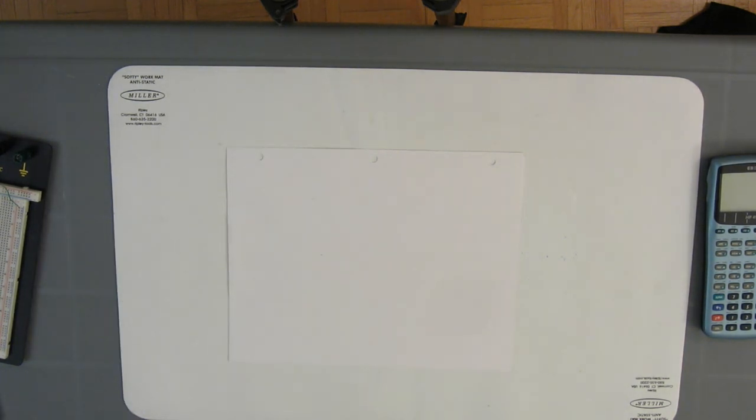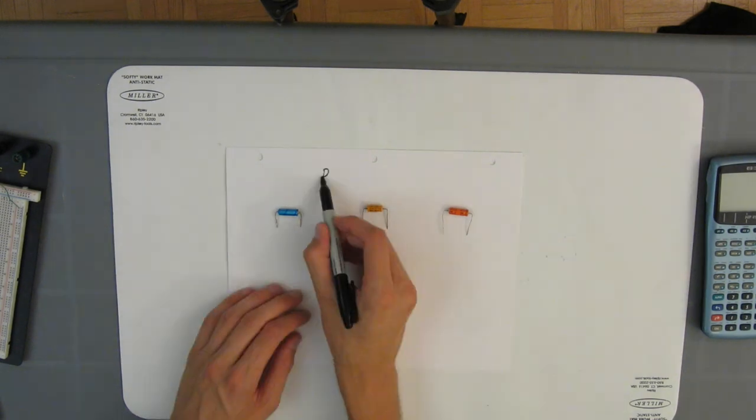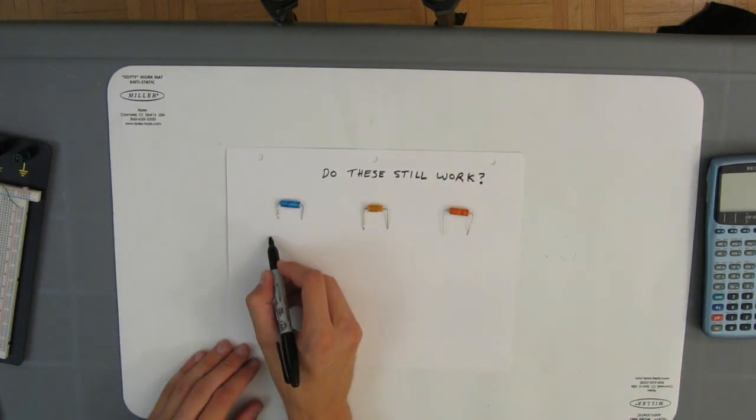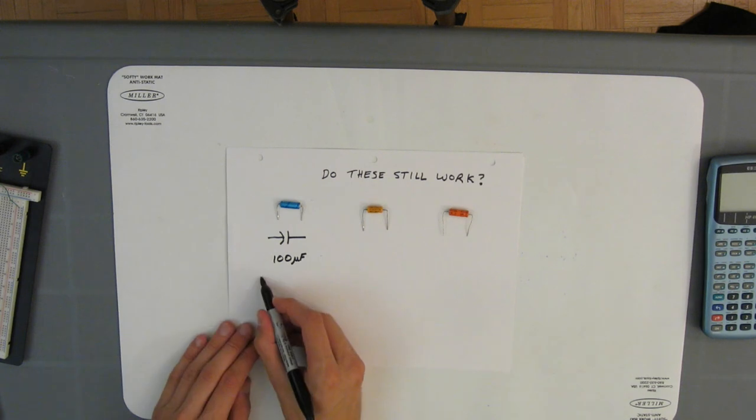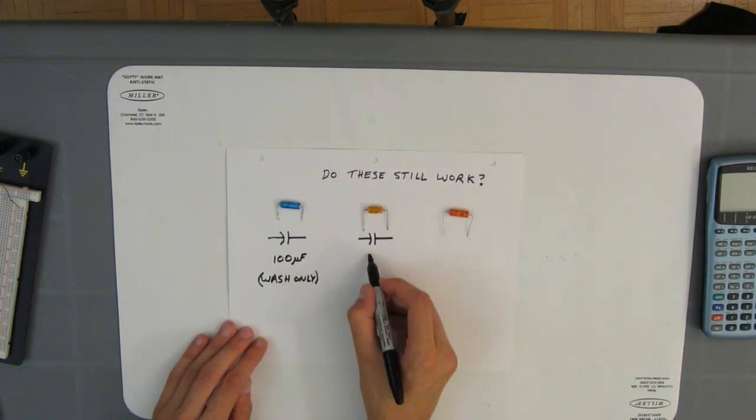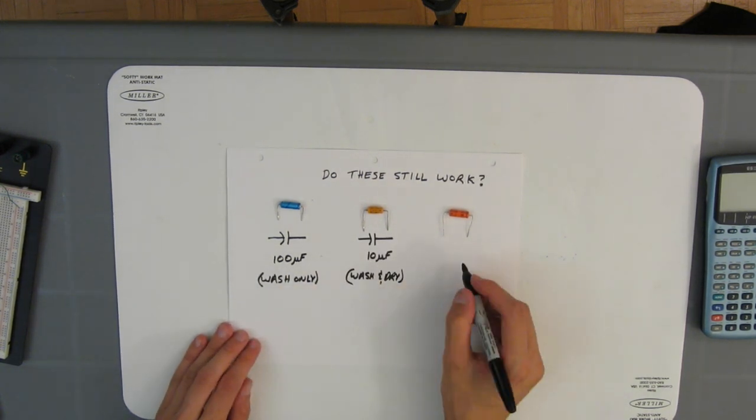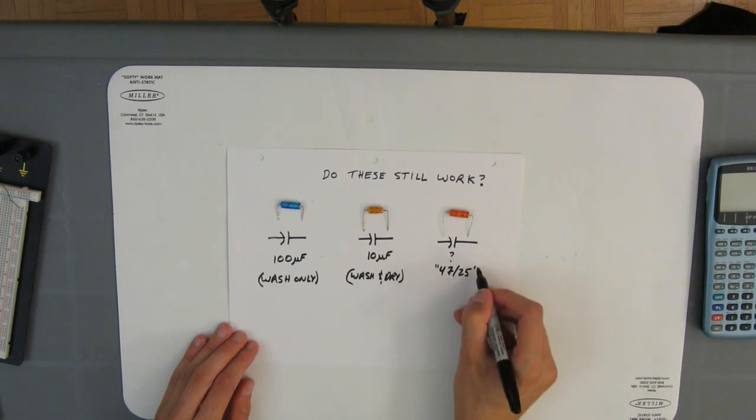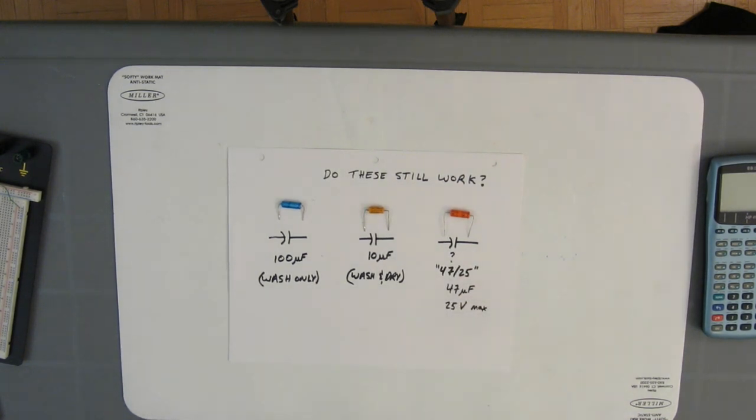Anyway, I have these three capacitors. Supposedly the blue one is 100 microfarads, the yellowish gold one is 10 microfarads, and the orange one, I'm not sure what this one is, it says 47 slash 25. I guess that means 47 microfarads with a maximum of 25 volts. I want to see if these squeaky clean capacitors still work, and to do that, I need to measure their capacitances.